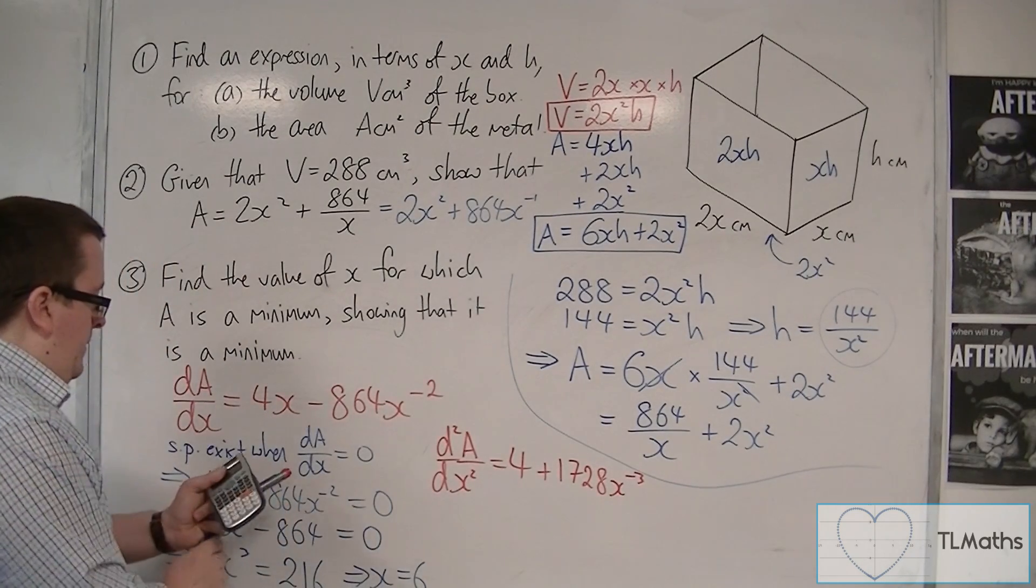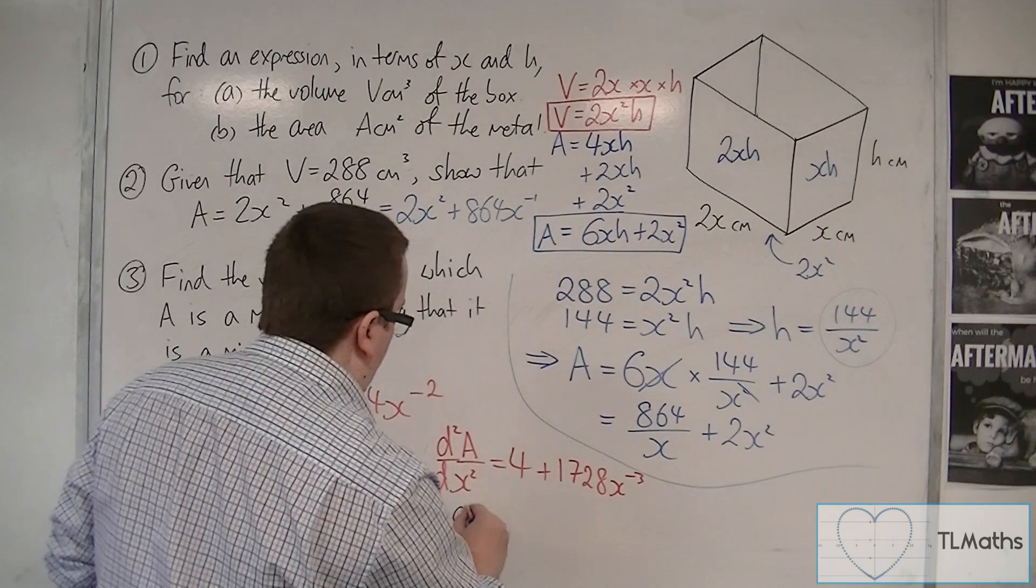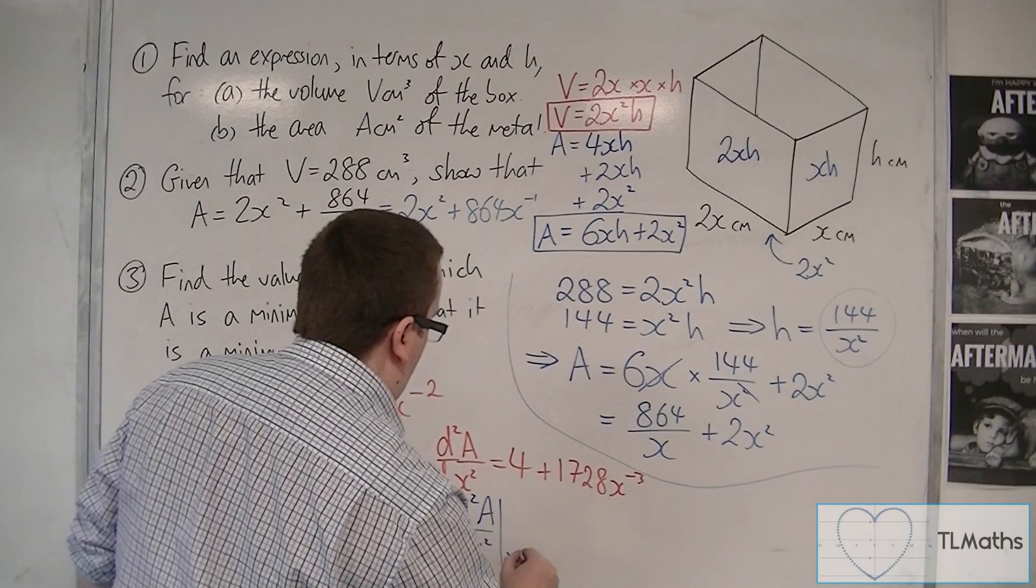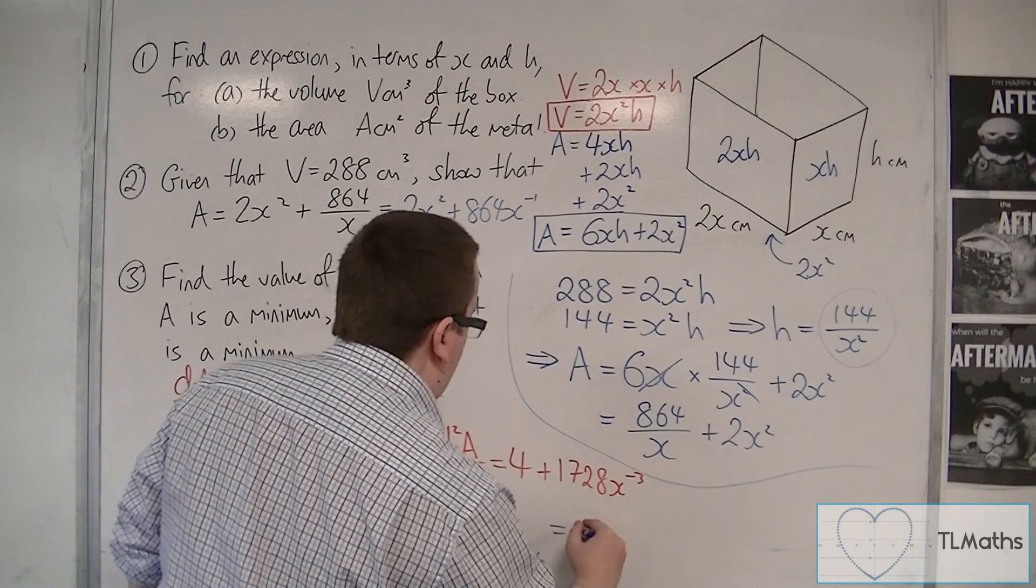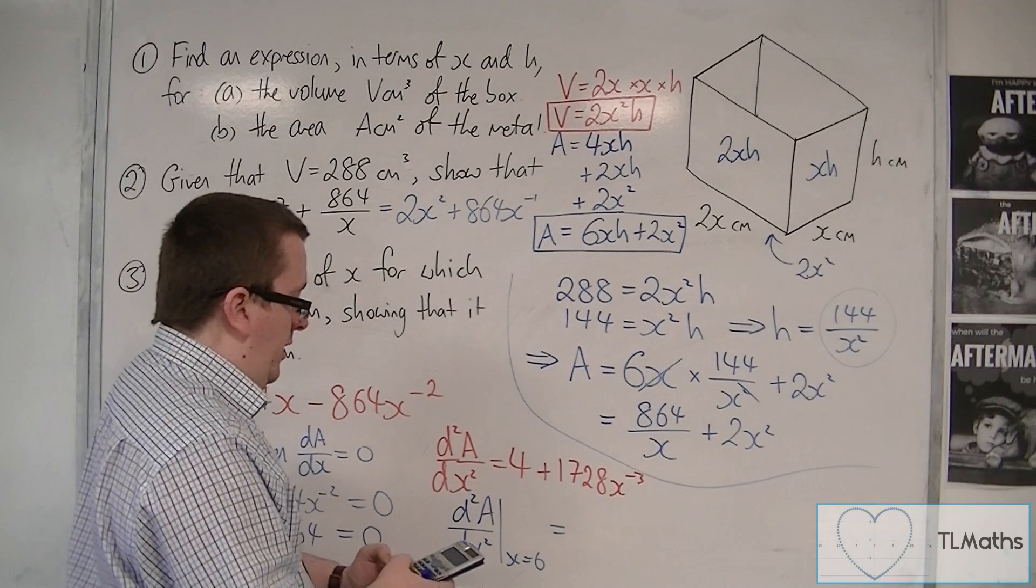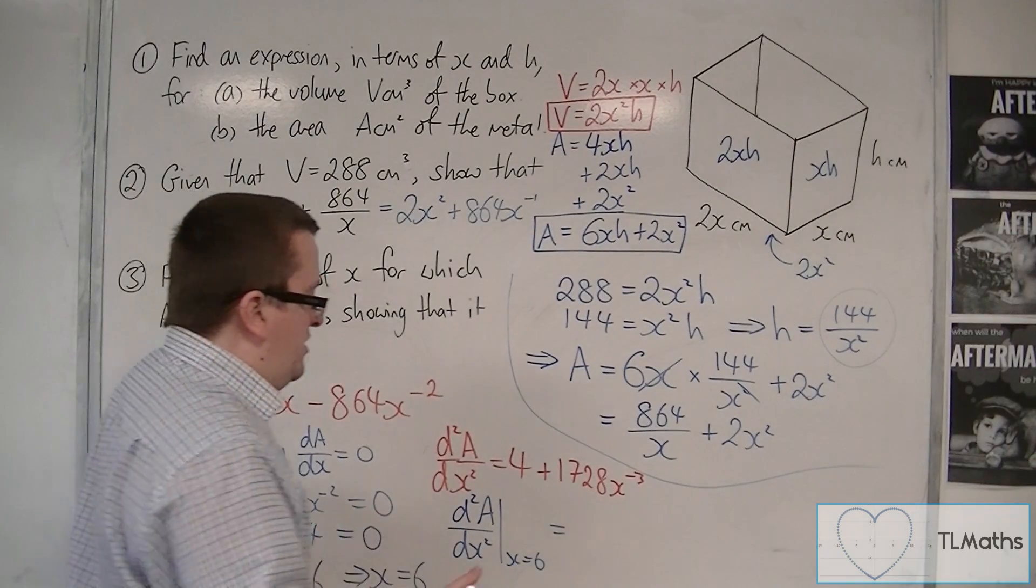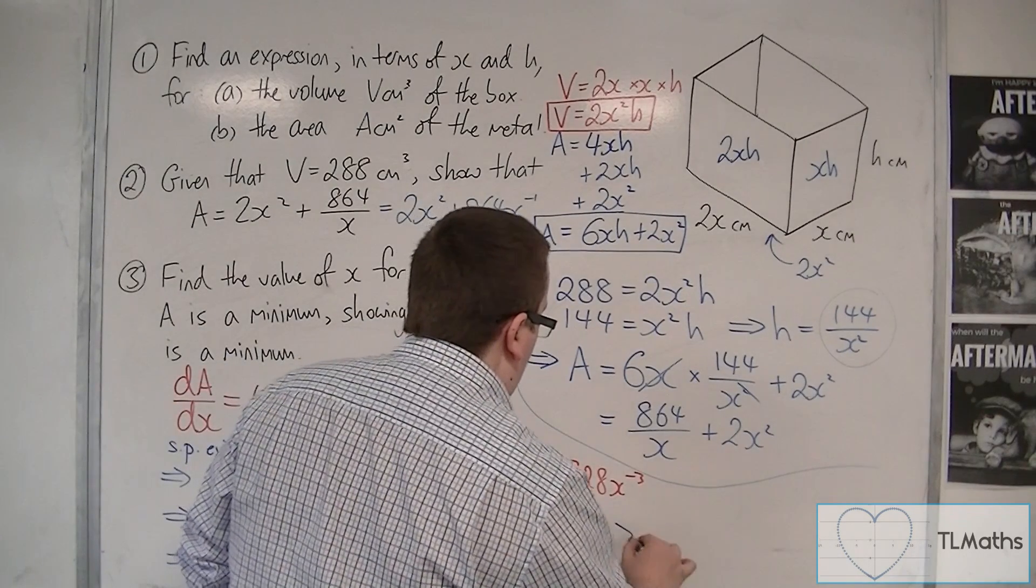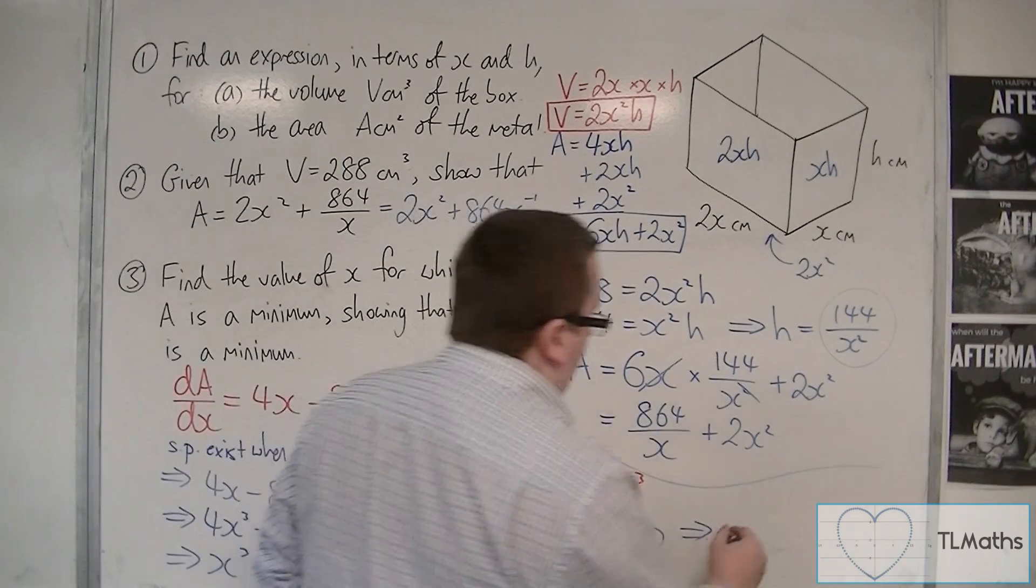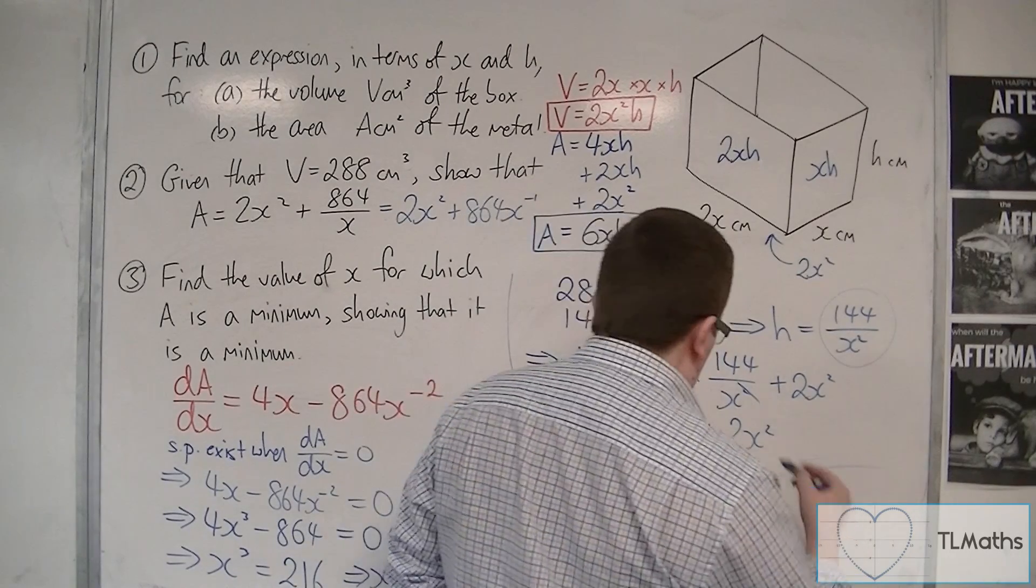Then, I need to substitute in my x value for the stationary point. So, d²A by dx squared, when x is 6, is equal to 4, plus 1728 times 6 to the power of minus 3, which is 12. That is positive, and that implies that x equals 6 gives me a minimum.